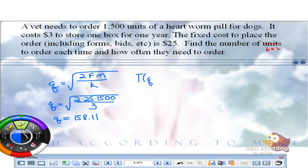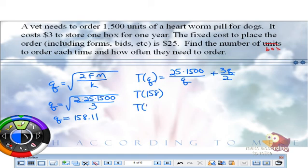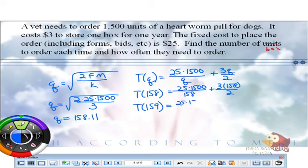So, total cost. It's FM over Q. So, what's our F? 25. Our M. And Q is just Q for right now. Plus K. That's 3. Q is just Q over 2. If you want to clean up 1500 times 25, feel free to do so. You don't have to. But we need to do two things. We need to try 158 and 159. So, in the previous one, we got a whole number, which was great. We did not have to go back to the cost function. In this one, we did not get a whole number, which means we have to go to the cost function.